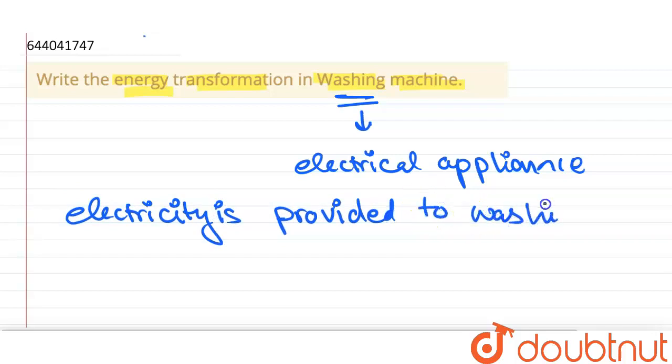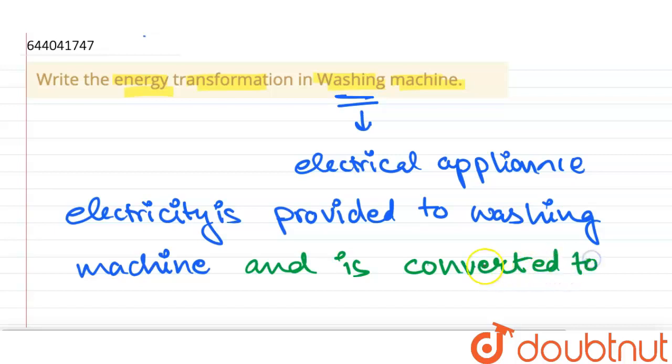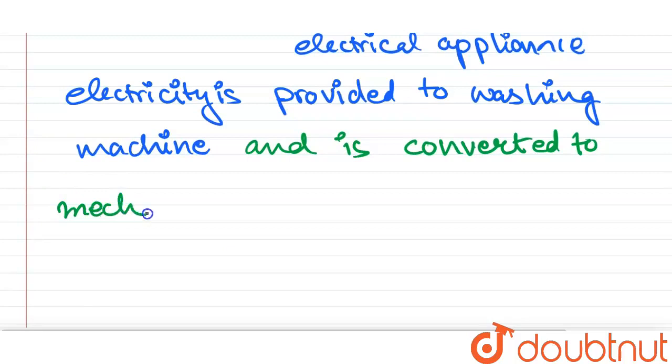Electricity is provided to the washing machine, and this electricity is converted into rotary motion. That is, it is converted to mechanical energy. This mechanical energy is then used in the washing machine.